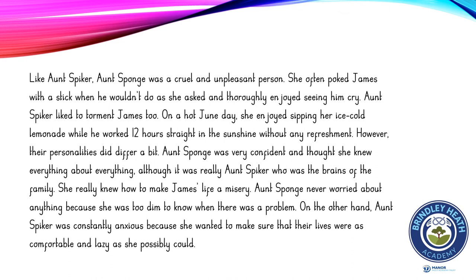There's a second paragraph here. Like Aunt Spiker, Aunt Sponge was a cruel and unpleasant person. She often poked James with a stick when he wouldn't do as she asked and thoroughly enjoyed seeing him cry. Aunt Spiker liked to torment James too. On a hot June day, she enjoyed sipping her ice-cold lemonade while he worked twelve hours straight in the sunshine without any refreshment. However, their personalities did differ a bit. Aunt Sponge was very confident and thought she knew everything about everything. Although it was really Aunt Spiker who was the brains of the family, she really knew how to make James's life a misery. Aunt Sponge never worried about anything because she was too dim to know when there was a problem. On the other hand, Aunt Spiker was constantly anxious because she wanted to make sure that their lives were as comfortable and lazy as she possibly could.